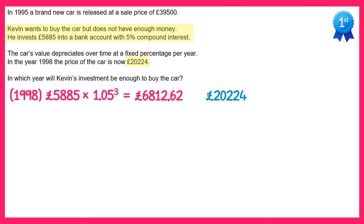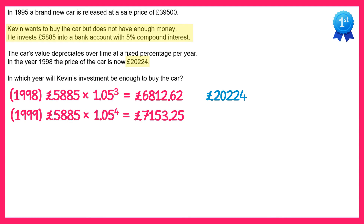Let's check the next year. In 1999, Kevin's investment will be £5,885 times 1.05 to the power four. The car will have depreciated one more time — reduced by another 20% — so we do £39,500 times 0.8 to the power four for the four years from 1995 to 1999. The car's value gives £16,179.20, and Kevin still doesn't have enough money.